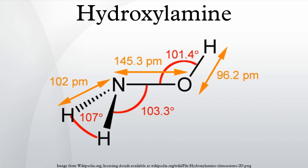Substituted derivatives of hydroxylamine are known as functional groups. If the hydroxyl hydrogen is substituted, this is called an O-hydroxylamine. If one of the N-hydrogens is substituted, this is called an N-hydroxylamine. Similarly to ordinary amines, one can distinguish primary, secondary, and tertiary hydroxylamines, the latter two referring to compounds where two or three hydrogens are substituted, respectively.